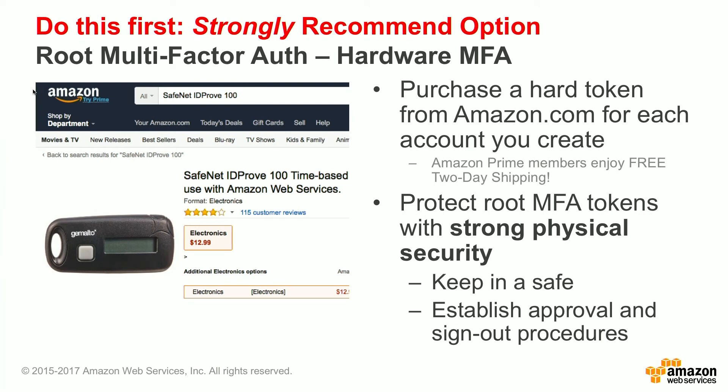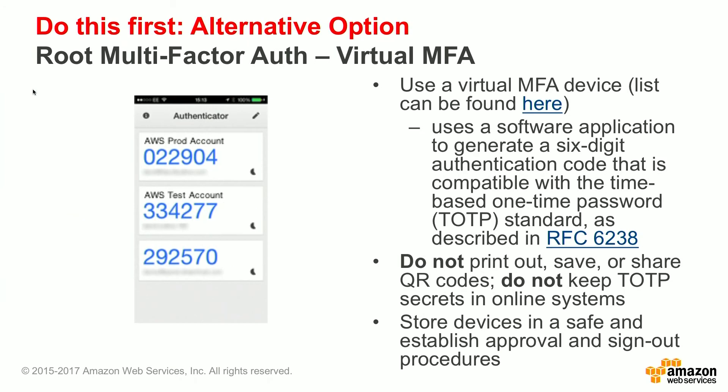Strongly recommended: set up multi-factor authentication on your root account using a hardware MFA. You can purchase a hardware token from Amazon.com for each account that you create. Do this first. An alternative option is to use a virtual MFA instead of a physical hardware MFA. You can use a virtual MFA device such as Authy, Google Authenticator, or any virtual device that uses the TOTP standard.